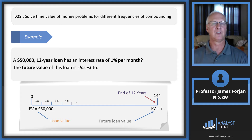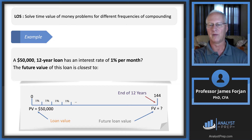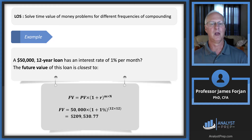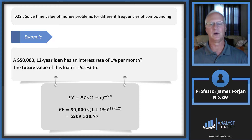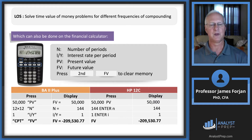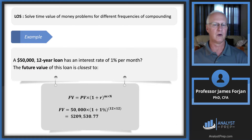Another example: $50,000 twelve-year loan at 1% per month. N = 12 × 12 = 144 months, I/Y = 1%. Enter these inputs and compute future value: FV = 50,000 × (1.01)^144 = $209,530. You get the same answer whether you use the formula or either financial calculator.